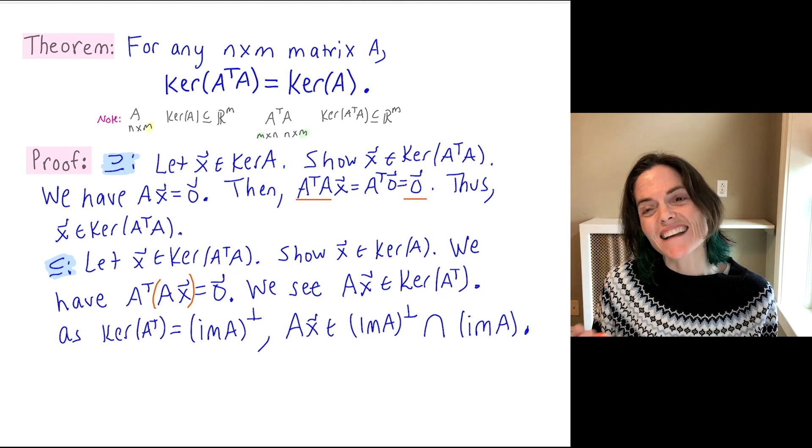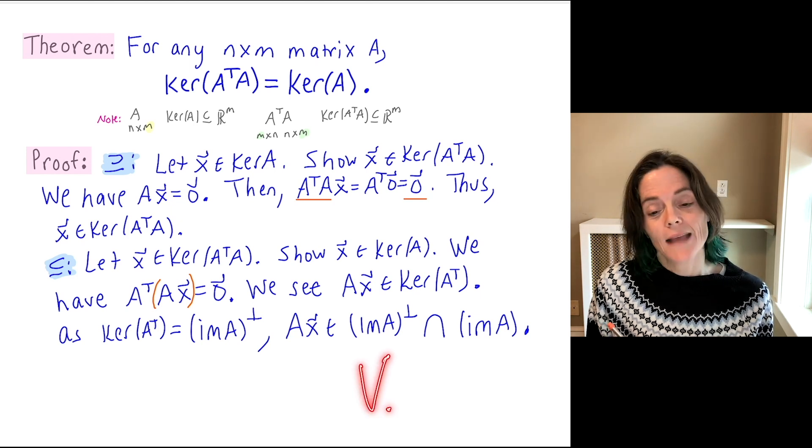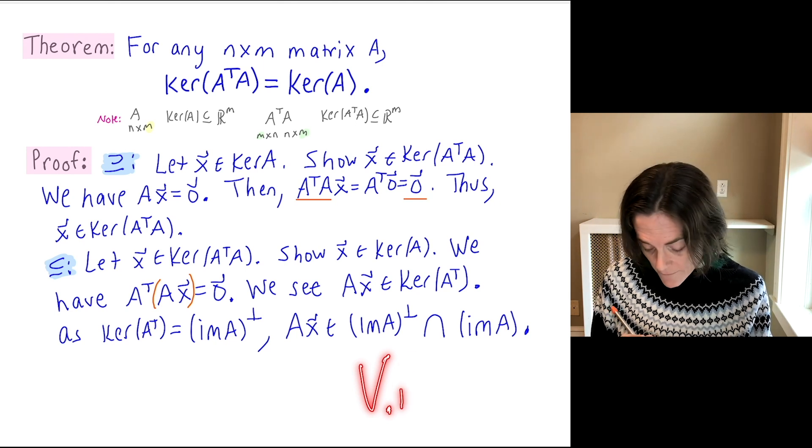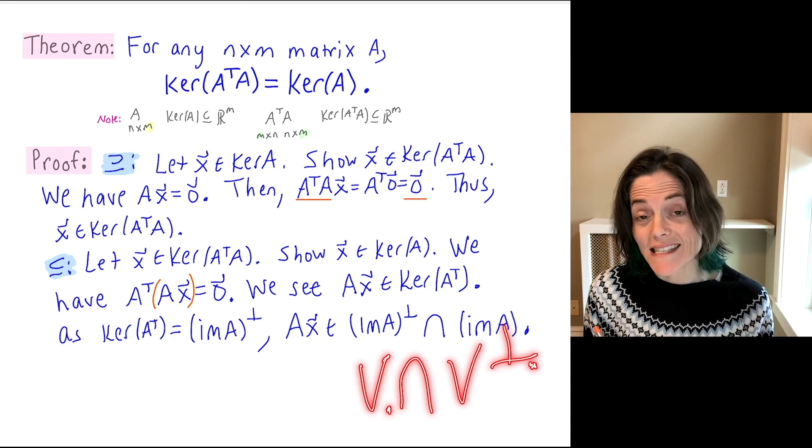So Ax is in this intersection of these two subspaces. Now we have to go back and think about orthogonal complements. Take any subspace V, any subspace of R^n, or R^m in this case. If you take V intersect V perp, the orthogonal complement, you get just the zero vector.